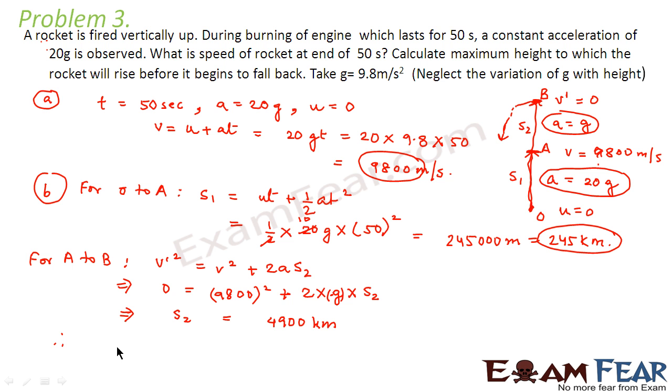Therefore what do we find? The maximum height that the rocket can reach will be equal to S that is equal to S1 plus S2 which is equal to 245 plus 4900 kilometers which is equal to 5145 kilometers. That means this is the maximum height till which the rocket will reach and after that it will start falling back to the ground.